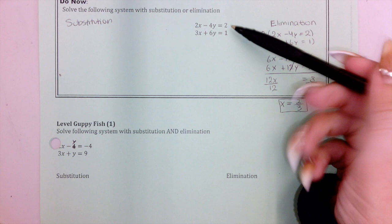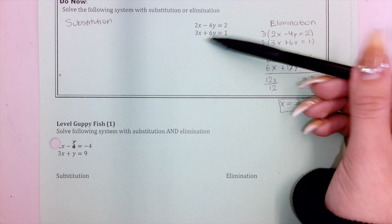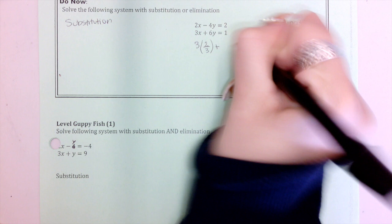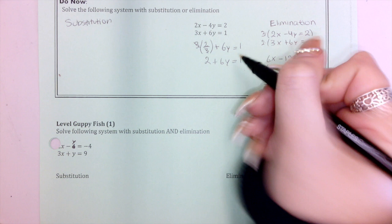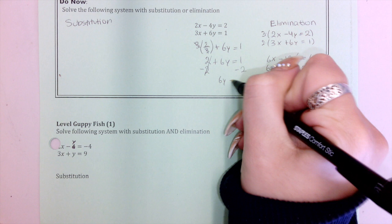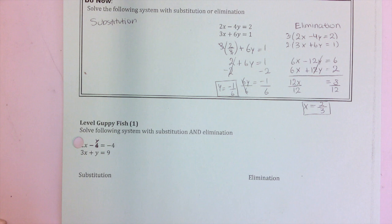Now I have to solve for my Y value. I go back to the main equations and plug x in. I'll pick the second equation because the 3's will cancel: 3 times 2 over 3 plus 6y equals 1. The 3's cancel, leaving 2 plus 6y equals 1. Subtract 2 from both sides: 6y equals negative 1. Divide by 6, and y equals negative 1 over 6.